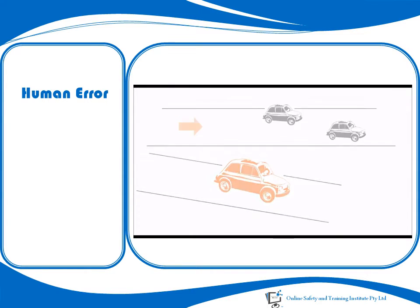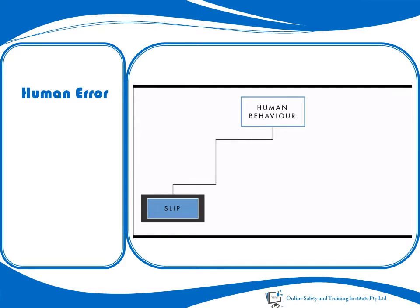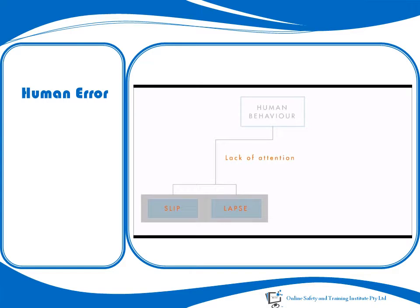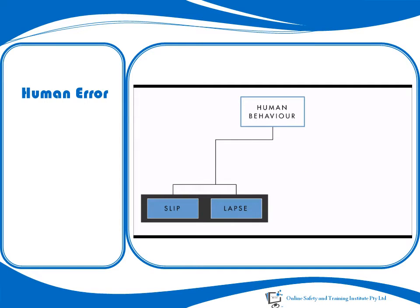Another way to make an error is to forget something — we call these lapses. This is when you discover you've gone past your exit, or left the house and closed the door when the keys are still inside. Both slips and lapses are failures of automatic processing when a good plan goes wrong. You didn't mean to take the wrong exit or lock yourself out. Lapses happen when our memory gets overloaded and flushes out what we should have remembered — good plan, lousy execution.